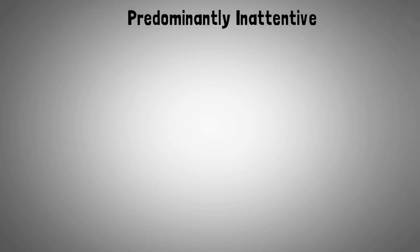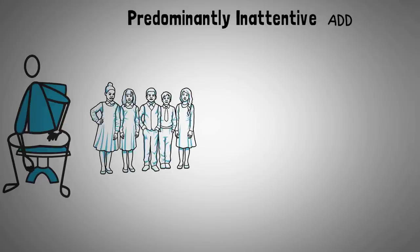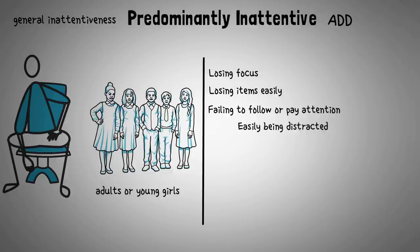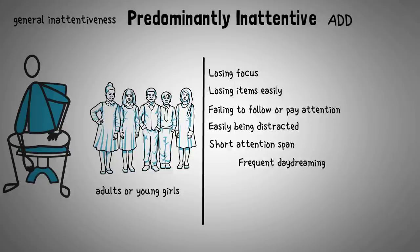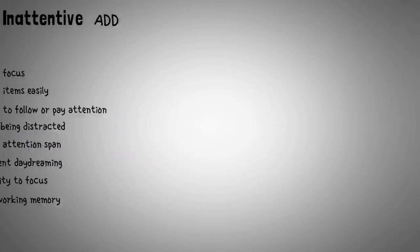Next, predominantly inattentive ADHD — previously known as ADD — is more commonly diagnosed in adults or young girls, and is often mistaken for general inattentiveness. Symptoms include losing focus, losing items easily, failing to follow detailed instructions, being easily distracted, having a short attention span, frequent daydreaming, and inability to focus on conversations due to distractions. People with predominantly inattentive ADHD also often have a poor working memory, which is actually something you can test.